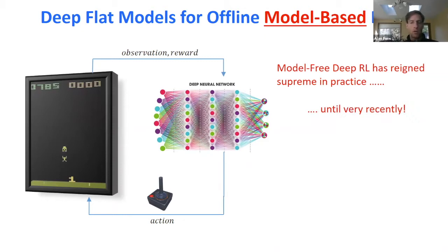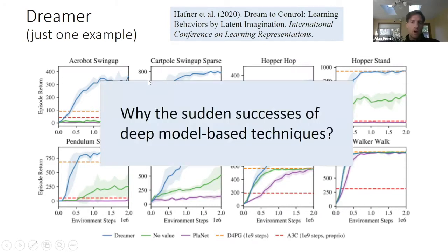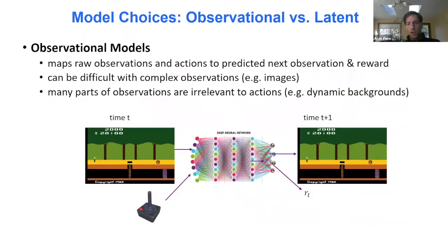You just saw one of them — you can call MuZero a model-based algorithm. Dreamer is just one example of another recent model-based algorithm that is just beating the pants off some model-free methods. These model-free methods are learning with a hundred thousand times more data, and the model-based methods are winning. One hypothesis is that the key difference is between learning observational models versus latent models.